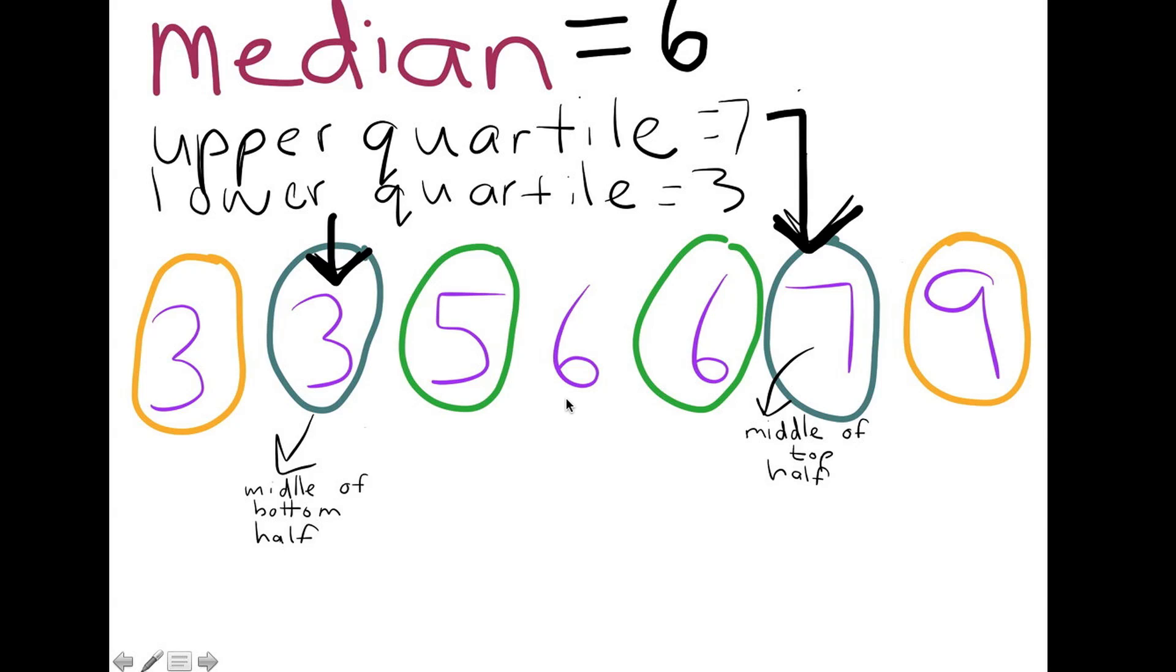From there, I can then calculate the upper quartile and the lower quartile. The upper quartile is the middle number of the top half. So if six was the middle of all the numbers, the upper quartile would be the middle of the top half of the numbers.